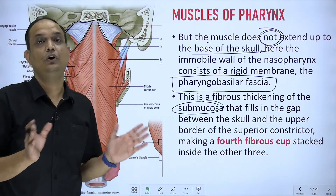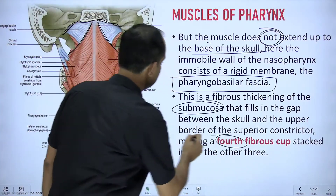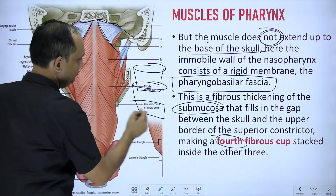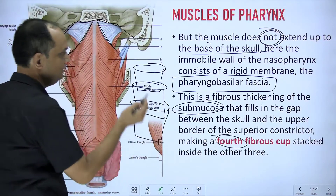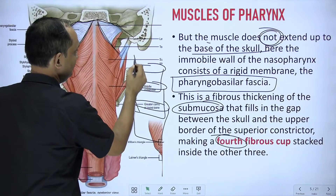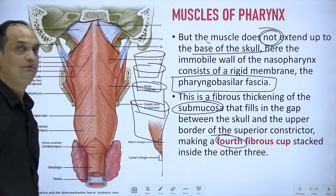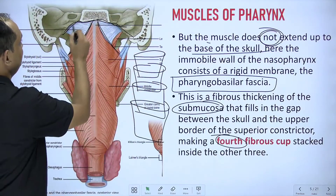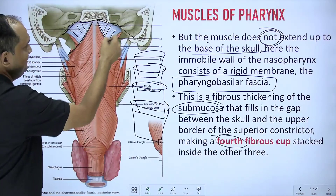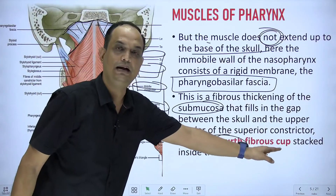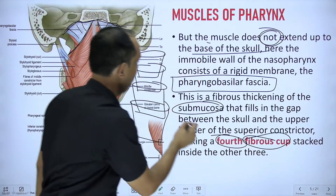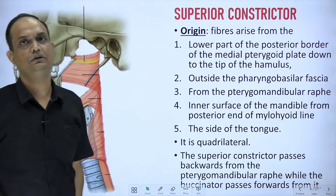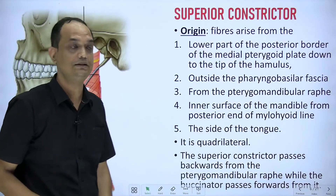The pharyngobasilar fascia can be considered a fourth fibrous cup sitting at the top of the pharyngeal tube. So if we picture the superior, middle, and inferior constrictors as three cups, the pharyngobasilar fascia is a fourth fibrous cup above them all, attaching to the base of the skull. Now let's discuss the superior constrictor.